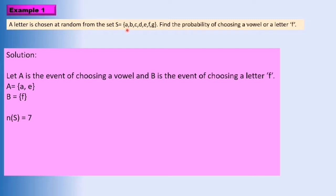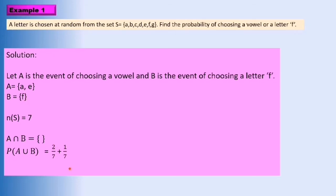The number of elements in the sample space: we have 1, 2, 3, 4, 5, 6, 7 — so n equals 7. From here, we find that set A intersect set B equals the empty set. So probability of A union B equals probability of event A plus probability of event B, which is 2 over 7 plus 1 over 7 equals 3 over 7.